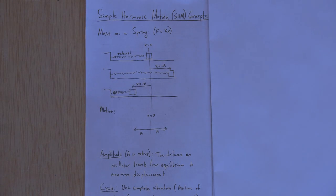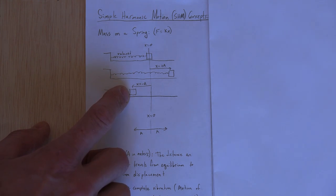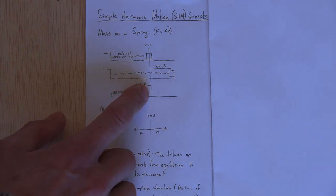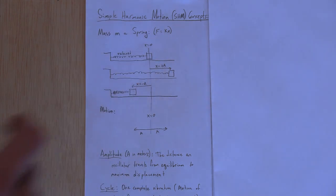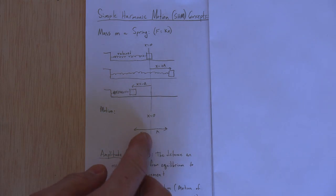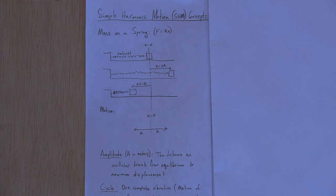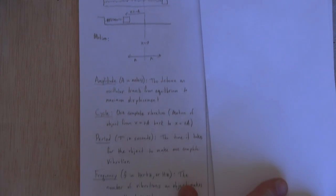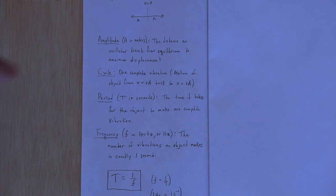And then it'll basically overshoot the equilibrium an equal distance of A, but in the left direction. So we could say here X is minus A. And then of course now the spring is compressed. So it'll push this forward and then make it extend beyond that equilibrium so it'll oscillate back and forth. This is just a diagram of the motion going back and forth. Distance A forward and then back to equilibrium at distance A backwards. So that is our first definition for the day, the term amplitude. Amplitude, its symbol is A and it's measured in meters and it's defined as the distance an oscillator travels from equilibrium to maximum displacement. Another definition, cycle. Cycle is one complete vibration, the motion of an object from X equals plus A left and then back to X equals plus A. That's what we call a cycle or an oscillation.